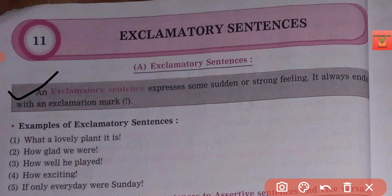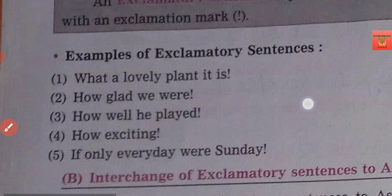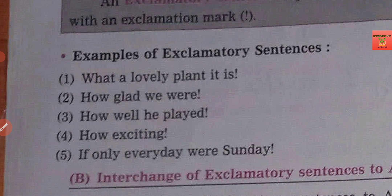So let's see the definition: an exclamatory sentence expresses some sudden or strong feeling, and it will always end with an exclamation mark. This is the identification by which you can easily identify this type of sentence, as compared to sentences ending with a full stop or question mark.